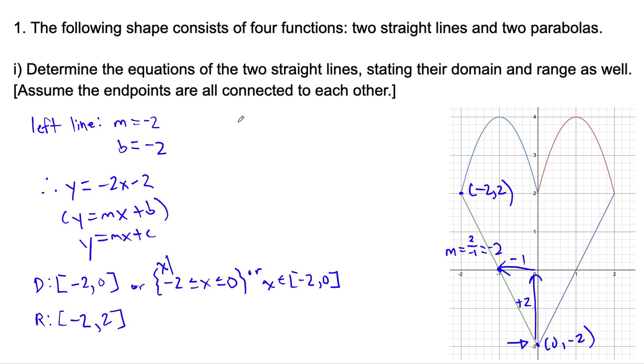For the right line, we could do something similar. The slope now this time is rise 2, run 1. So it's a slope of 2, and the y-intercept is the same.